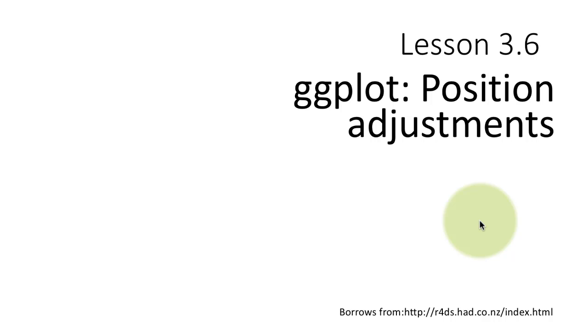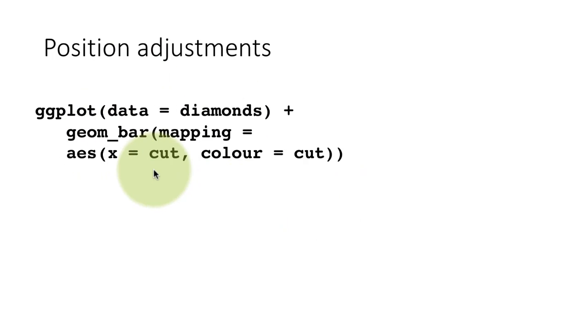One very important concept in ggplot deals with position adjustments. Let's see what this deals with. Suppose I plot this data: ggplot data equals diamonds, which is the inbuilt diamonds data frame, and we are generating a bar chart, geom_bar, and we are saying x equals cut. That is, cut is what we are doing a bar on, just like before.